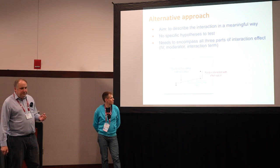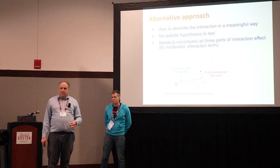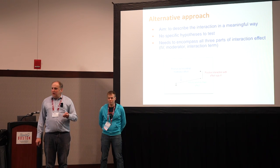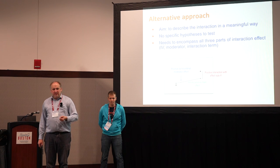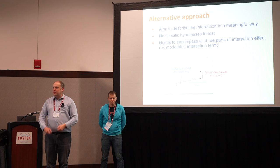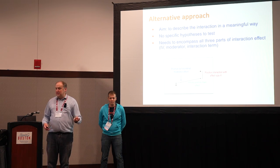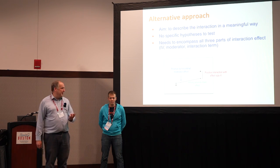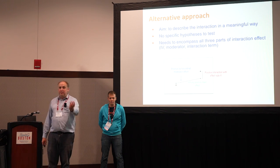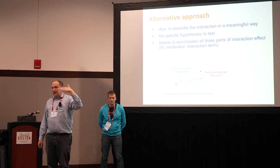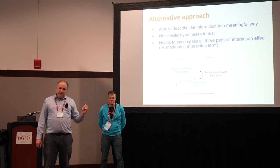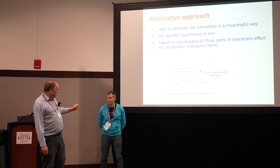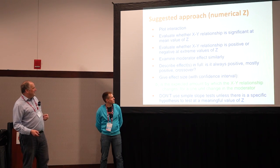What do I do instead? This is a work in progress, but it comes down to the fact that what we're really trying to do is describe an effect—not in significance terms, but say something about the population. There are three elements to the interaction effect worth commenting on, given by the effects for the independent variable, the moderator, and the interaction term. But actually, let's first go on to centering and come back to this.